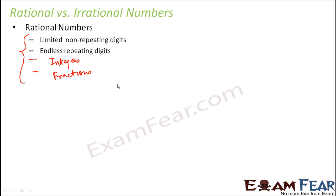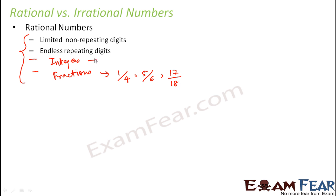Let me take some examples so that it becomes easier to understand. When we talk about fractions, examples would be 1/4, 5/6, 17/18. These are all fractions and these are also rational numbers because all fractions are rational numbers.